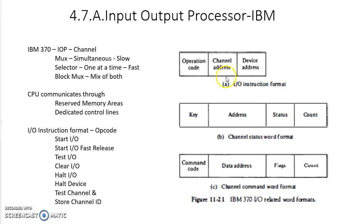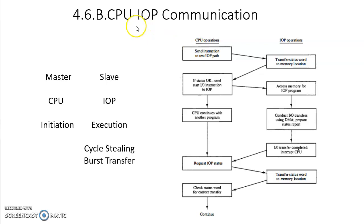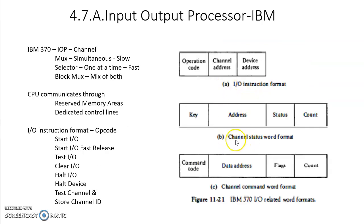After the channel is selected, the CPU might be interested to know the status of the channel — this is the channel status word format. Before using the input-output processor, the CPU first checks the status. It wants to see whether the I/O processor is available for the operation or not. If the status is okay, then only it assigns work to it; otherwise it won't. So the channel status word is very important for the CPU.